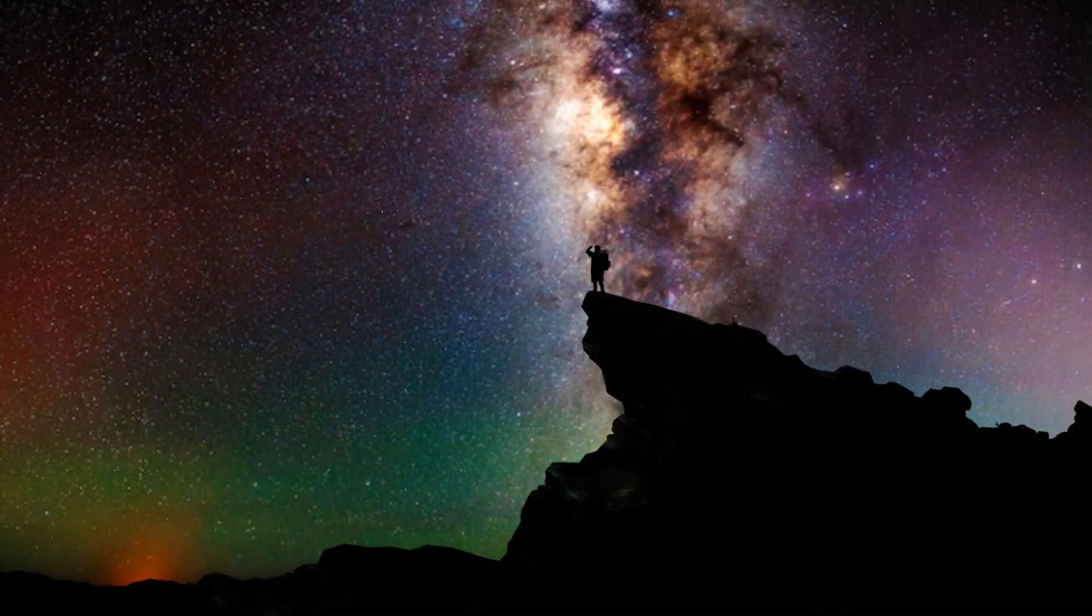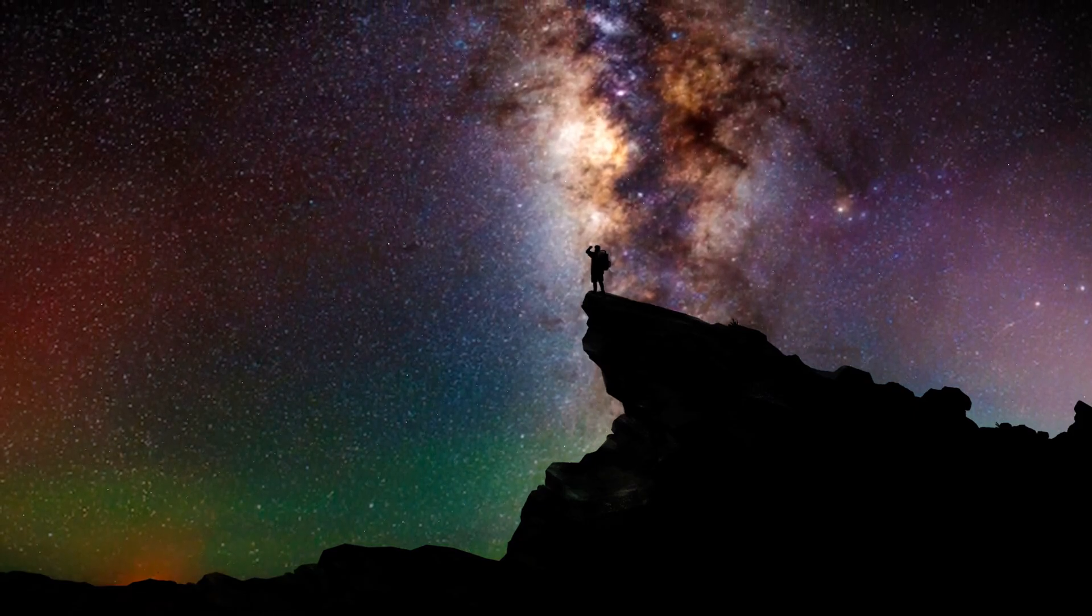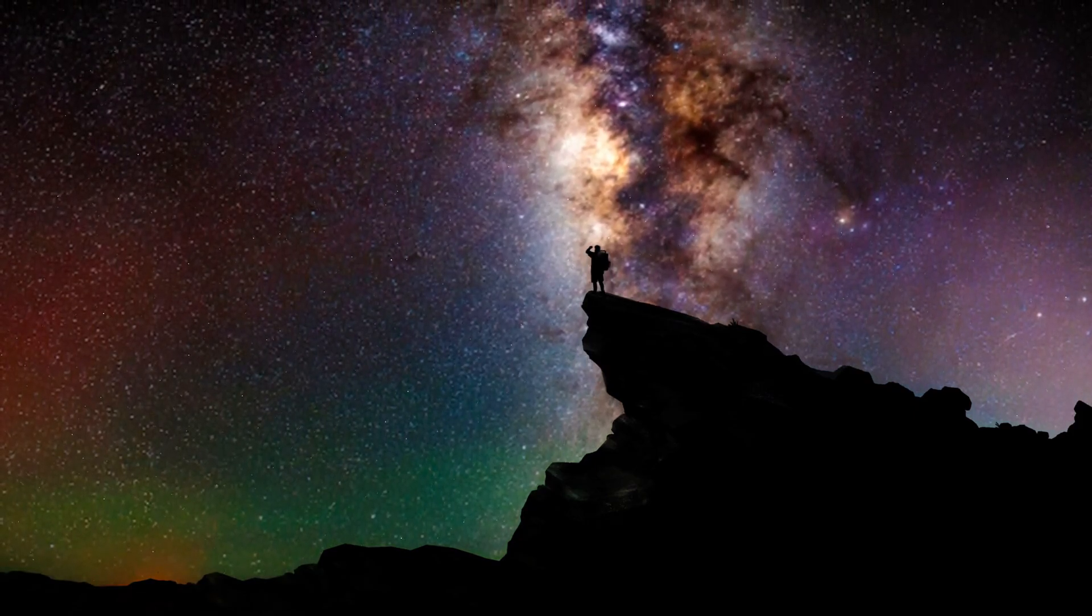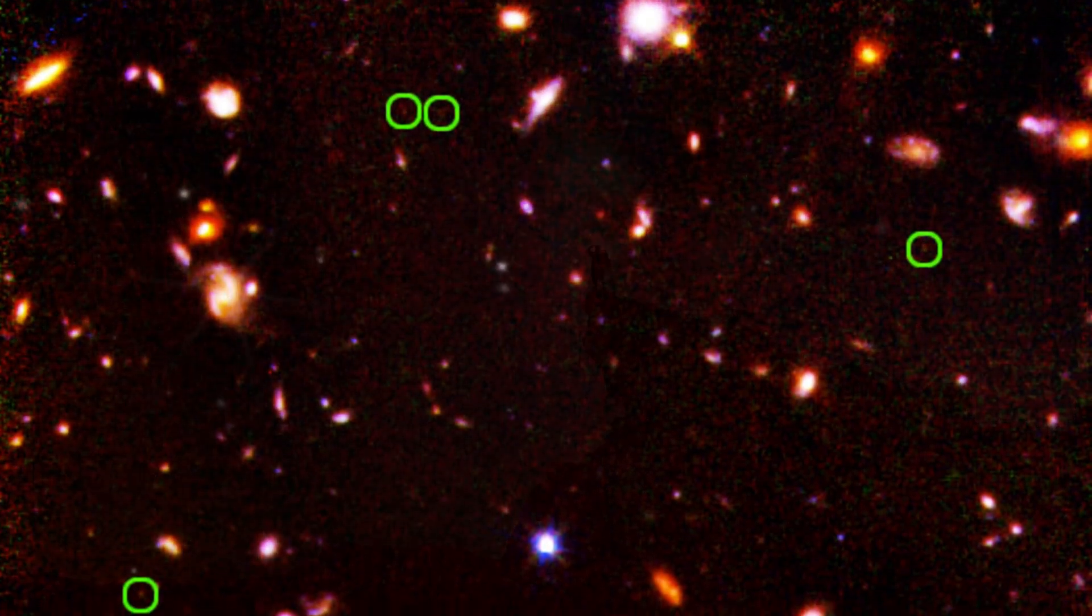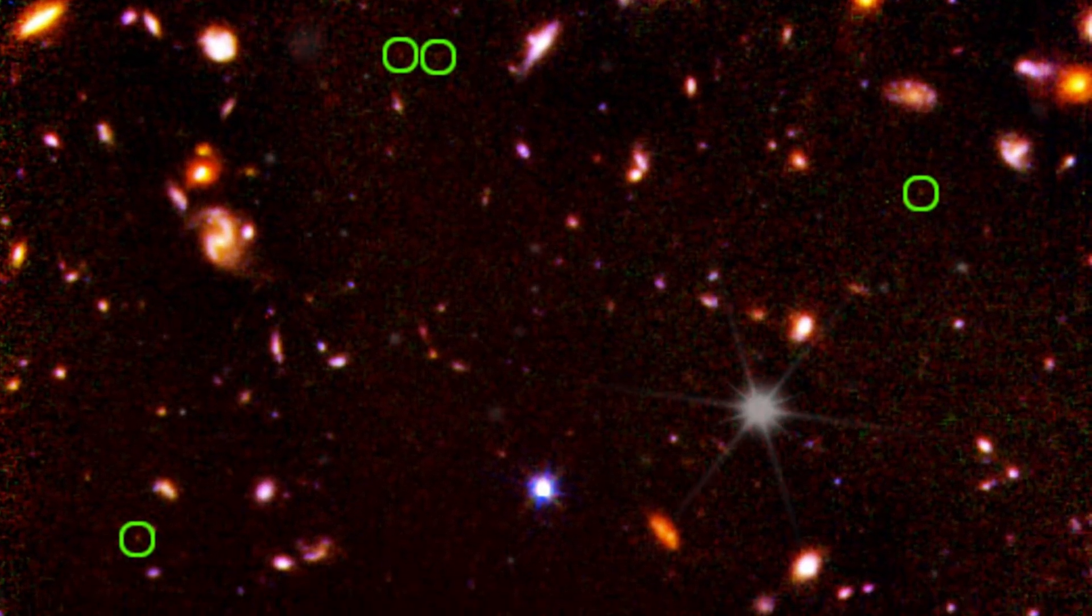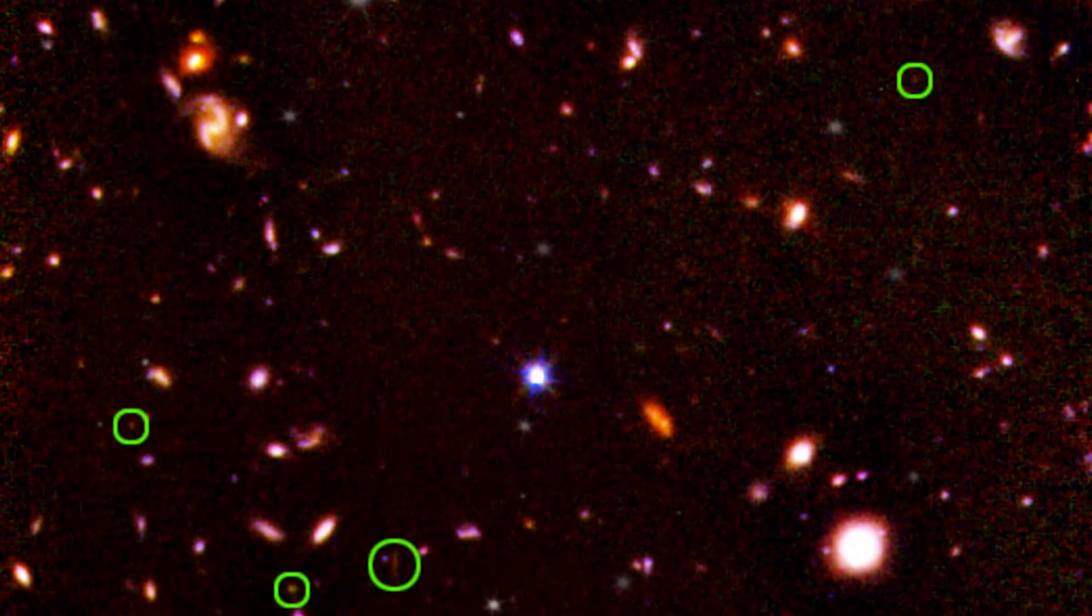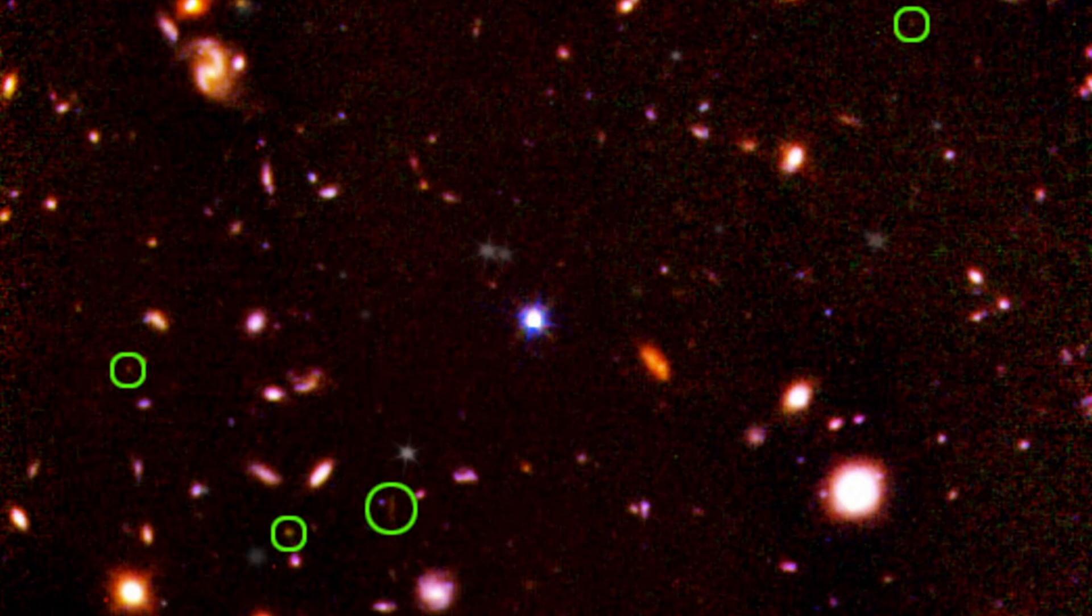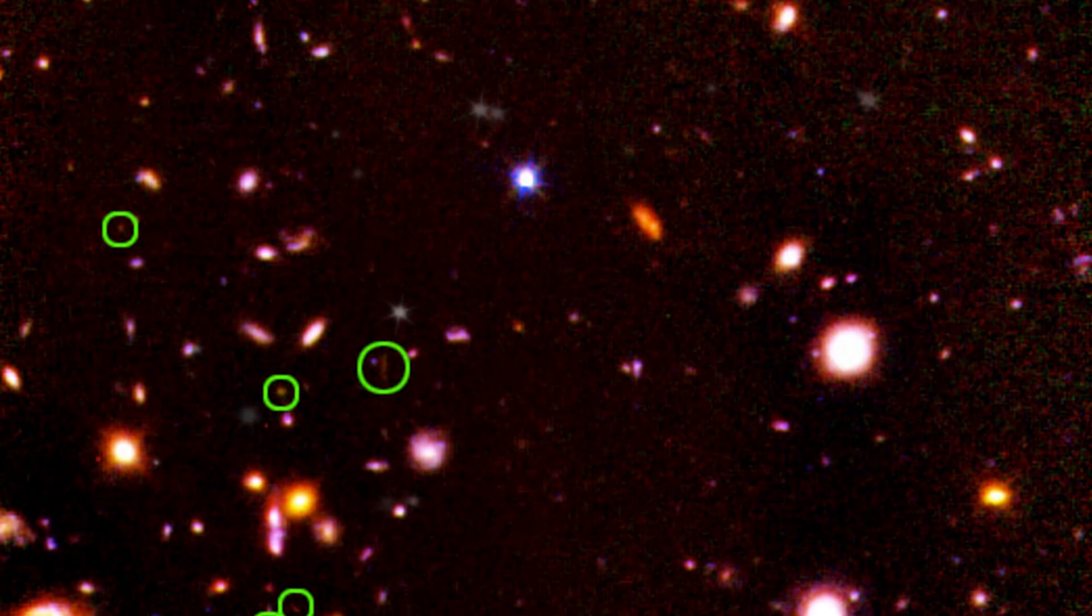Consider our own Milky Way, which took a staggering 13.7 billion years to form. In contrast, the Webb Telescope's revelations showcase galaxies akin to our Milky Way just a few million years post the Big Bang. This revelation bears the potential to reshape our comprehension of the genesis of the earliest galaxies in the universe.